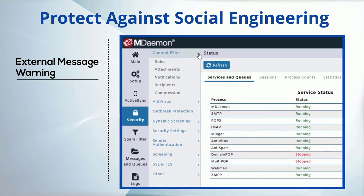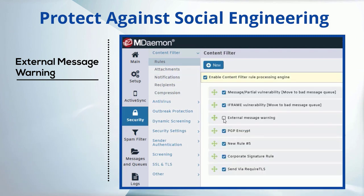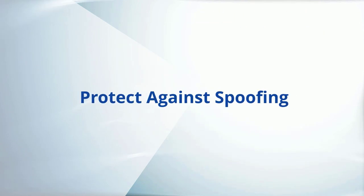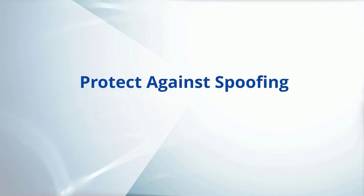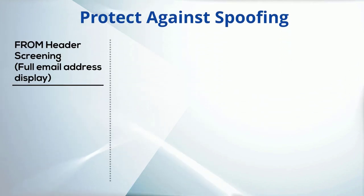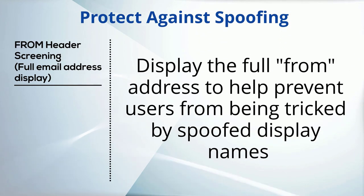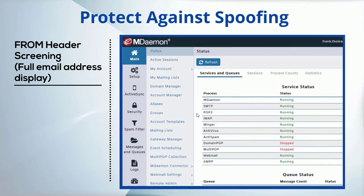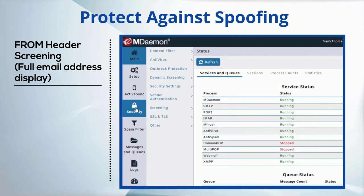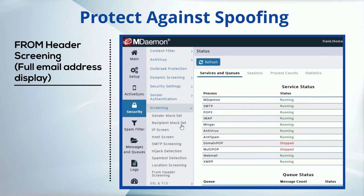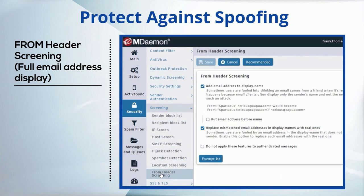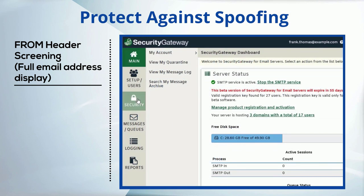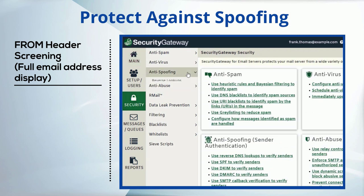This feature can be enabled via a content filter rule in MDaemon Remote Administration. To help users identify potential spoofing, configure your email server or gateway software to display the full from-header on inbound email messages. In MDaemon Remote Administration, you'll find this feature under Security, Screening, From-Header Screening. And in Security Gateway, you'll find it under Security, Anti-Spoofing, From-Header Screening.